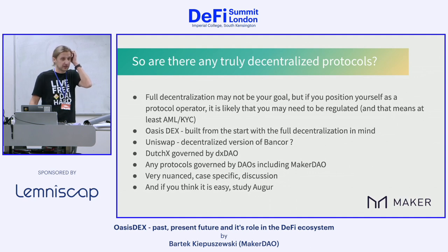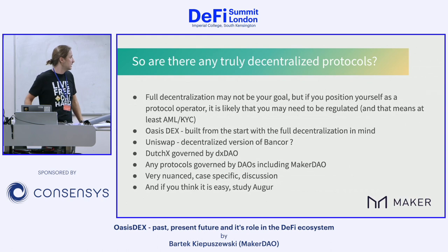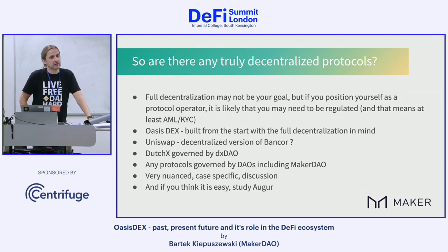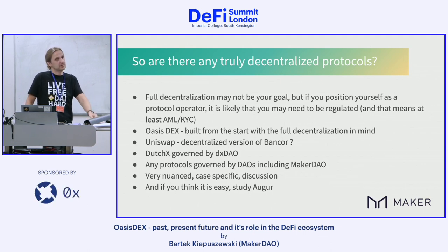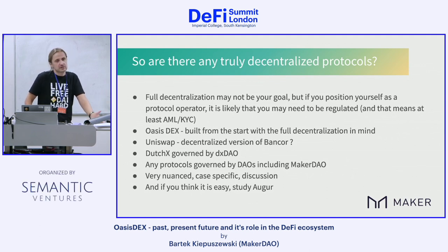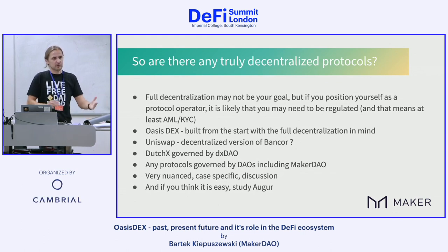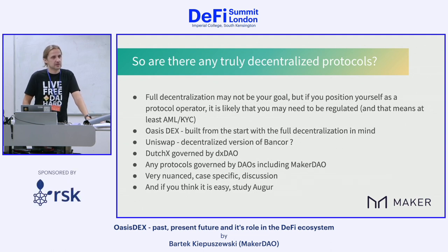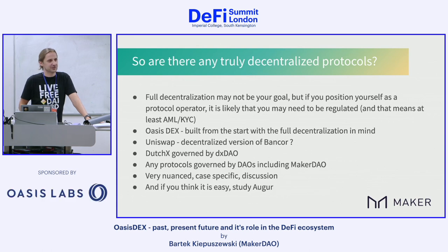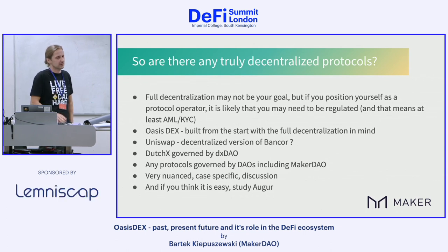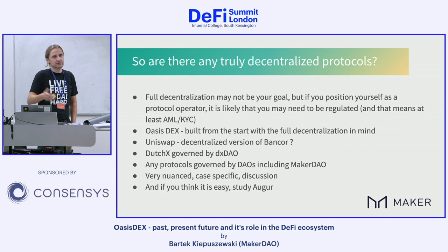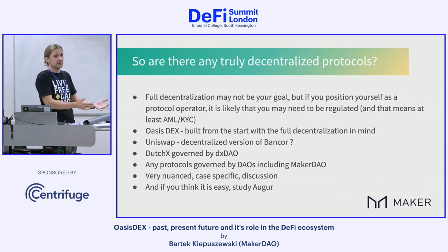Which protocols today are truly decentralized? I would say apart from Uniswap and Oasis, all protocols governed by DAOs are an interesting case — there's no single central entity. That's true for DutchX, governed by DXDAO, and obviously for MakerDAO and any other DAOs. But of course it's not crystal clear — some of you may have heard about the drama at DXDAO a few days ago. On-chain governance is always going to be a challenge. We still have a lot to learn, but at least we know what we want: we want people to govern, not a central entity that benefits from it. If you are the central entity, you will be regulated.